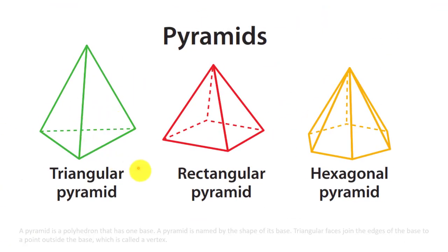A pyramid is a polyhedron that has one base. A pyramid is named by shape of its base. For example, a triangular pyramid has triangular base, a rectangular pyramid has a rectangular base, and hexagonal pyramid has hexagonal base. Triangular faces join the edges of the base to a point outside the base which is called vertex.